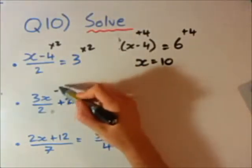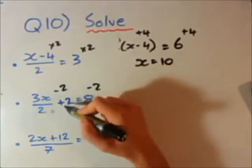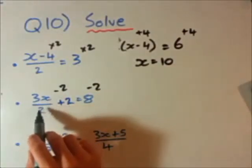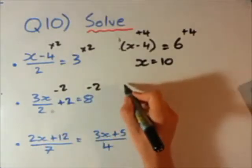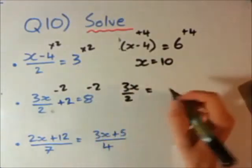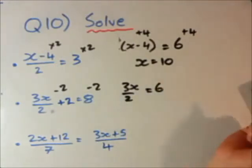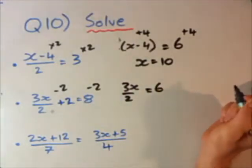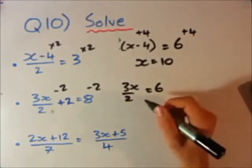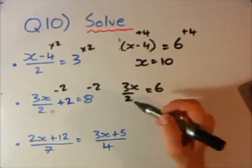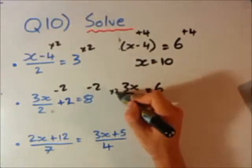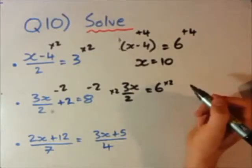First step I'm going to do, as a general rule, if you have a number by itself without an x, you should always deal with that first. Don't deal with this number attached to the x first, always deal with the number that doesn't have an x on it. I'm going to subtract 2 from both sides to get rid of this plus 2.